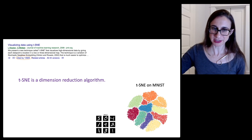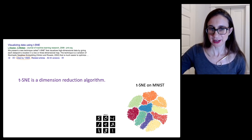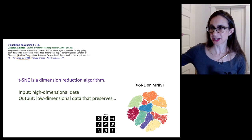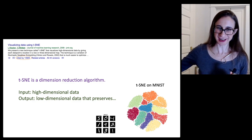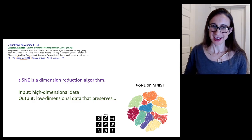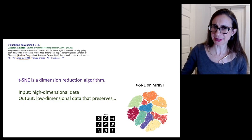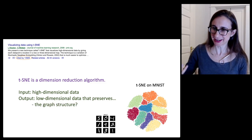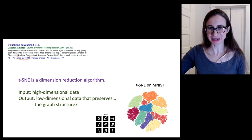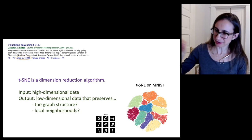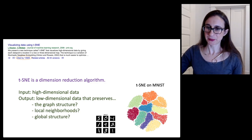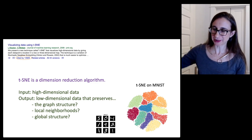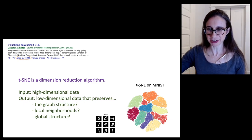The idea of these dimension reduction algorithms is that you want to take high dimensional data and project it onto low dimensions and try to preserve as much of the high dimensional information as you can. Maybe like the graph structure of the high dimensional data or the local neighborhoods, like who is next to who, or the global structure, like where the layouts of the clusters are in relation to each other.